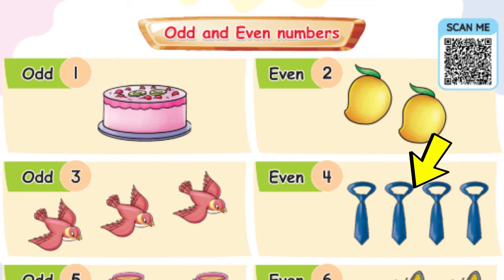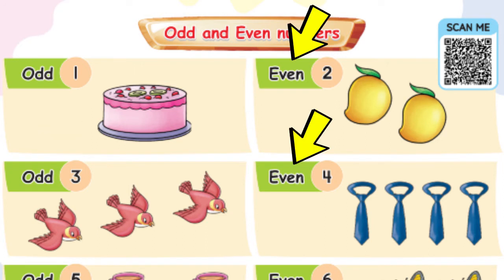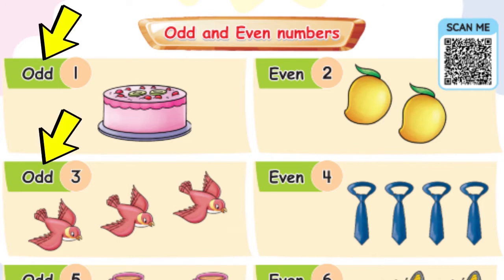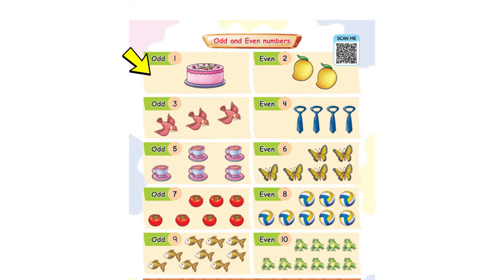Now look at the other objects — you can see four ties. We can arrange these ties into pairs. So what are odd and even numbers? Those numbers which can be arranged in pairs are called even numbers. On the other hand, odd numbers cannot be arranged in pairs.